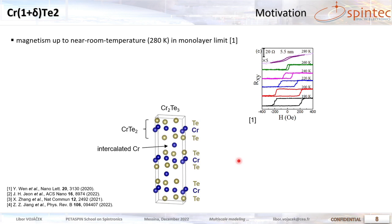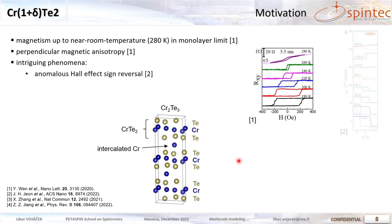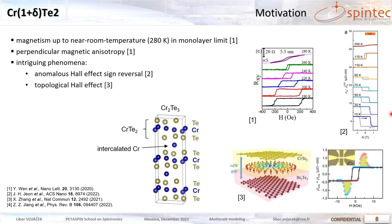There is magnetism, the Curie temperature is around room temperature, which is precious in 2D materials. There's perpendicular anisotropy and some interesting phenomena, for instance the anomalous Hall effect changes its sign when doping the material. And also there is topological Hall effect, which shows up as these overshoots in the Hall signal, which signify presence of non-collinear magnetism, possibly skyrmions.